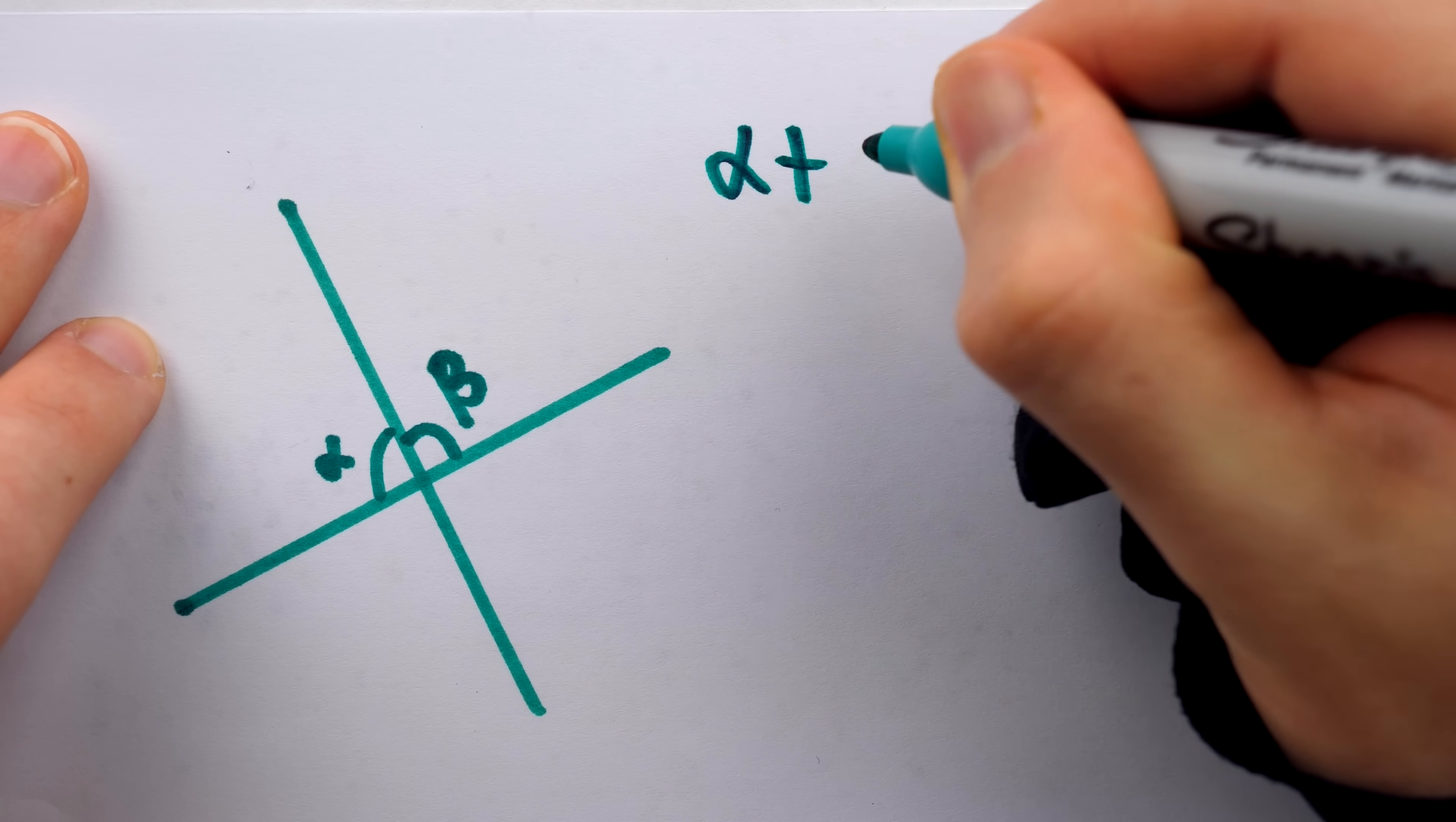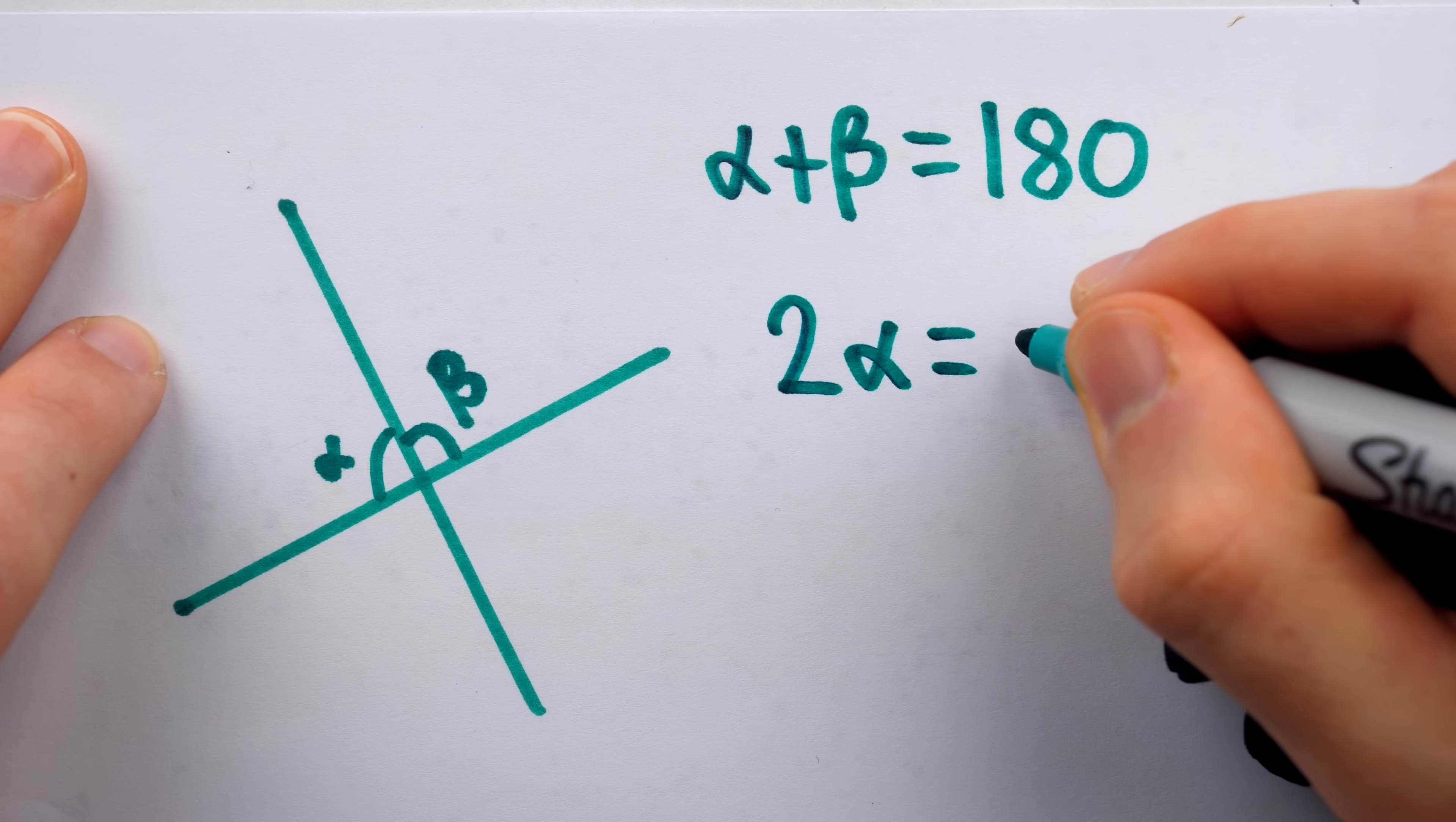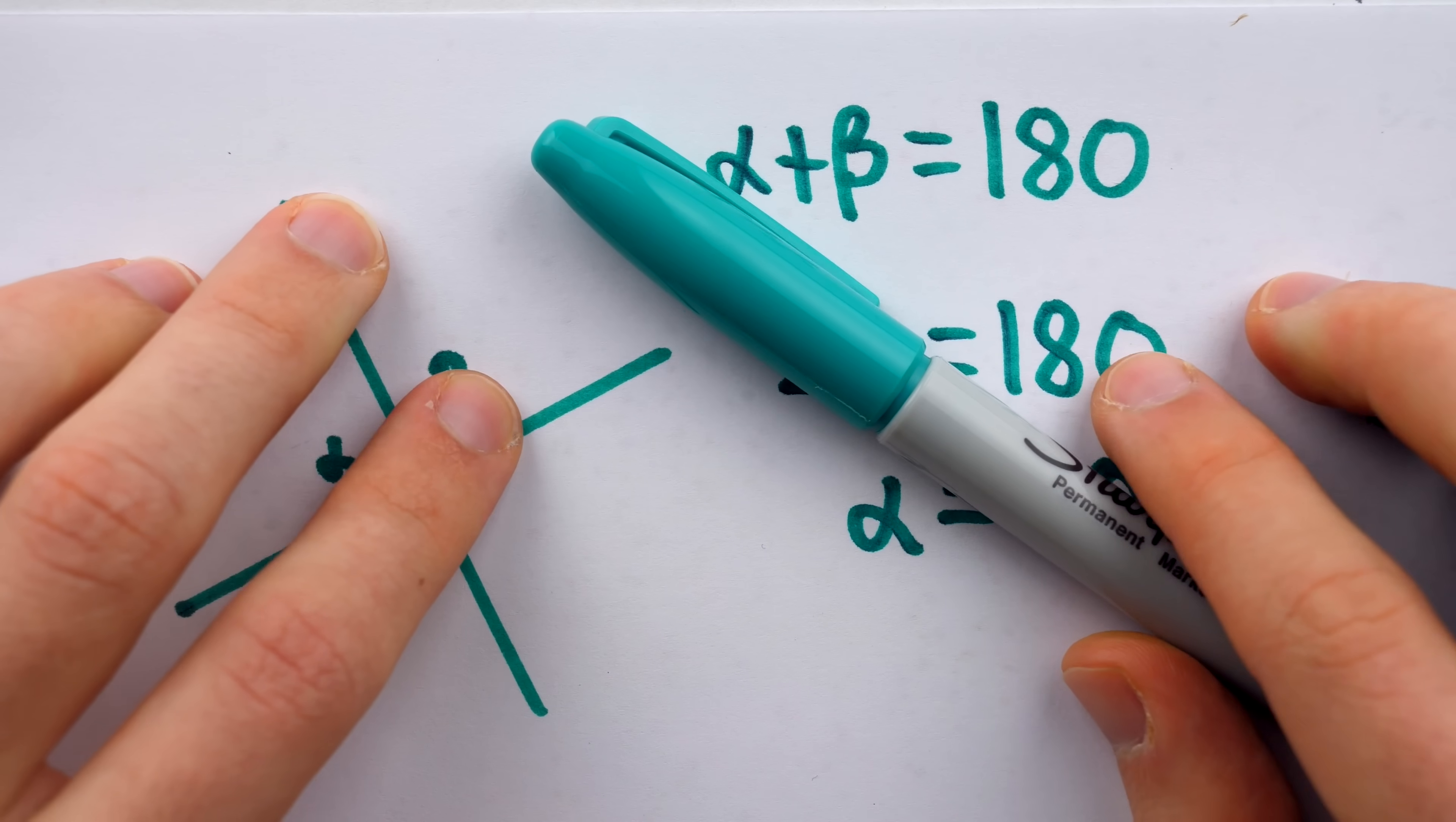then we know alpha plus beta equals 180, and if the lines are perpendicular, then alpha and beta must be equal, so this could be rewritten as two copies of alpha equals 180. And so of course, the angles themselves must in fact be right angles. Phew, I am glad that's settled.